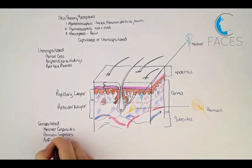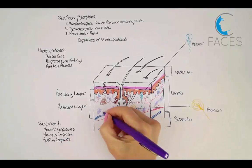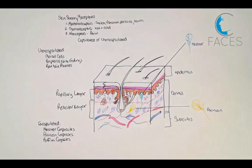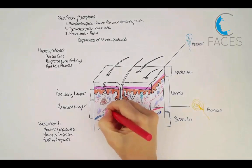Ruffini corpuscles have collagenous capsules firmly anchored to surrounding connective tissue and sense stretch, tension, twisting, or torque in the skin. They're located in the reticular layer of the dermis and are common on the soles of the feet.